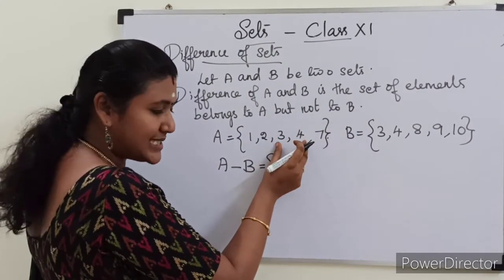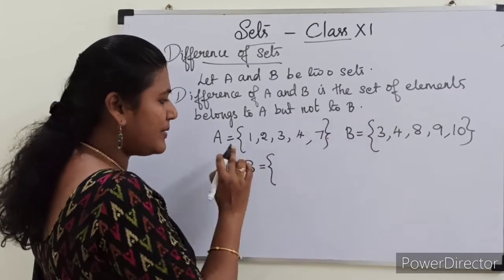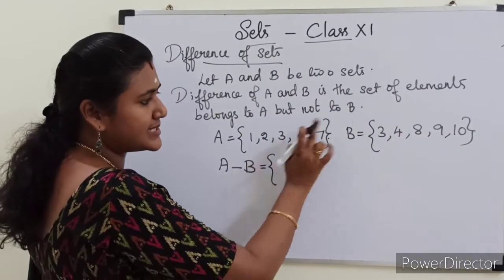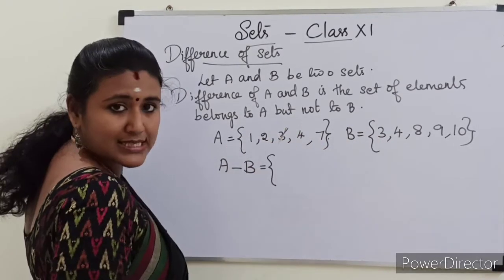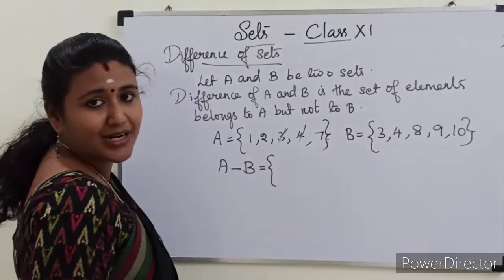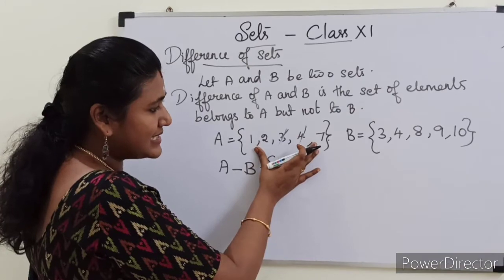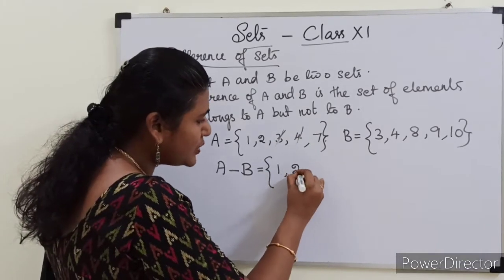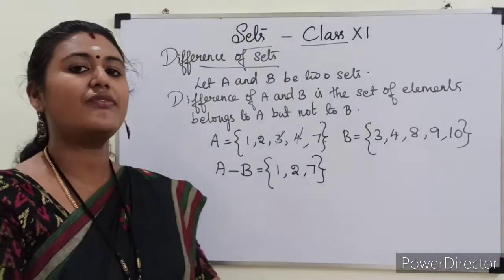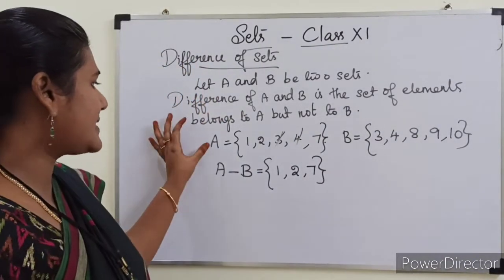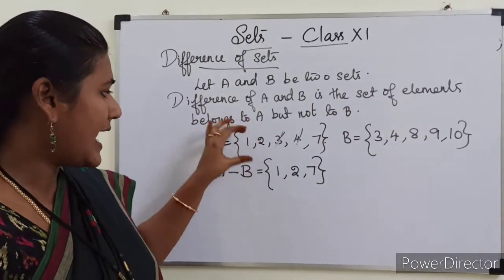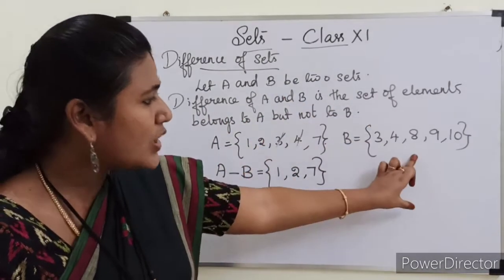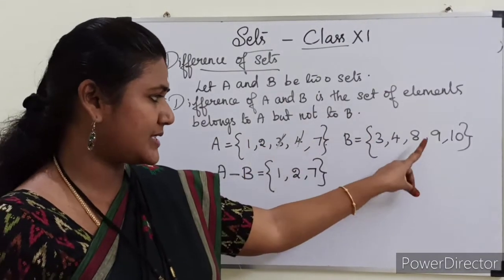Let us consider one example: A is equal to {1, 2, 3, 4, 7} and B is equal to {3, 4, 8, 9, 10}. We check in set A which elements are also in B: 1 is not in B, 2 is not in B, 3 is in B so we remove it, 4 is in B so we remove it. The remaining elements in set A are 1, 2, and 7. So A minus B is equal to {1, 2, 7} — elements of A which are not in B.